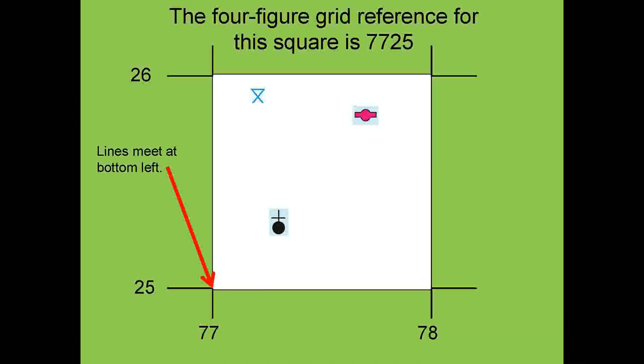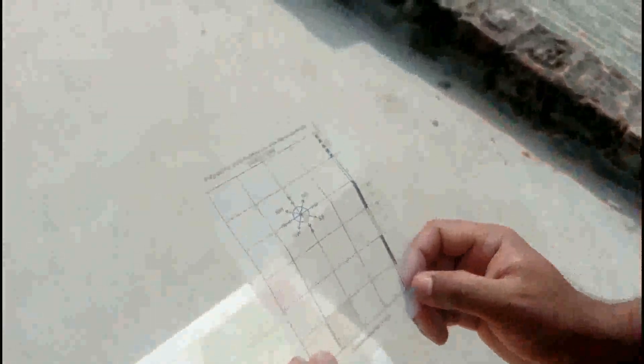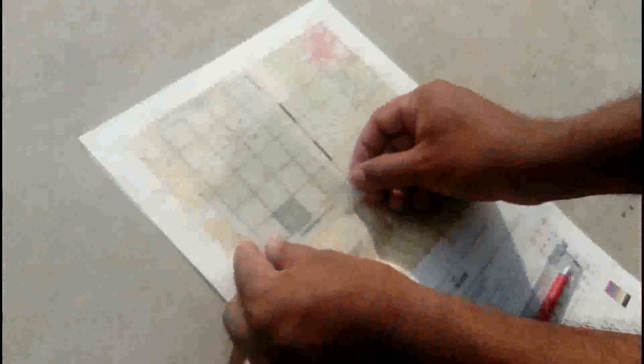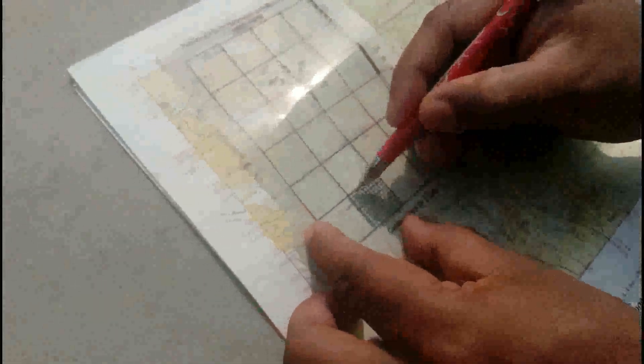Method 2: First find the 4-figure grid reference for the square and write it down with a space after each set of numbers. Use these transparent sheets to divide 1 grid square into 100 tiny squares. These are available for ICSE students with few topographical map workbooks. Now this square is divided up into 100 tiny squares with 10 squares along each side.